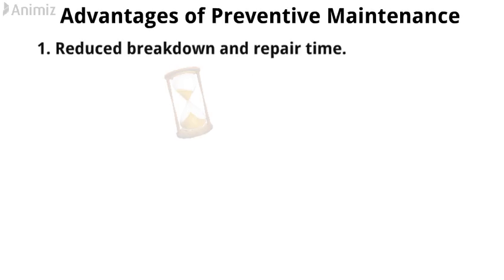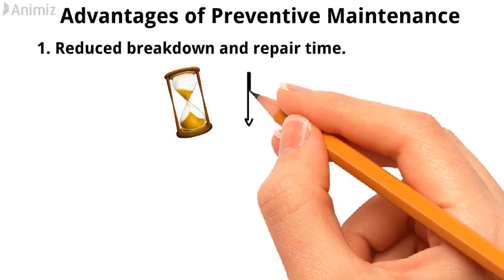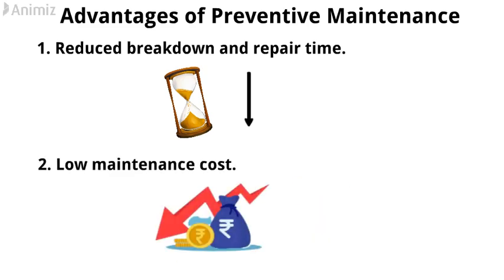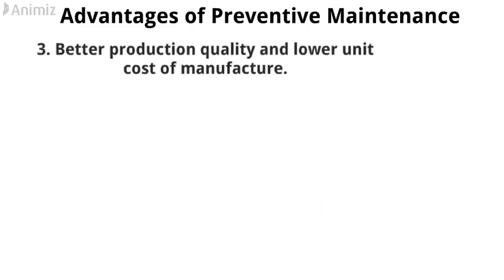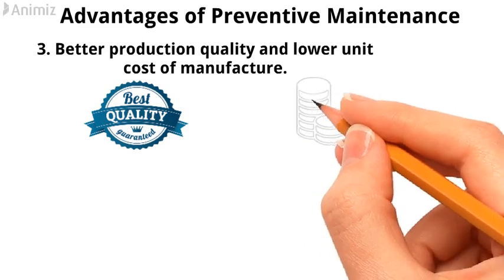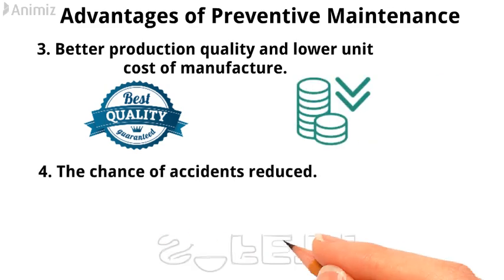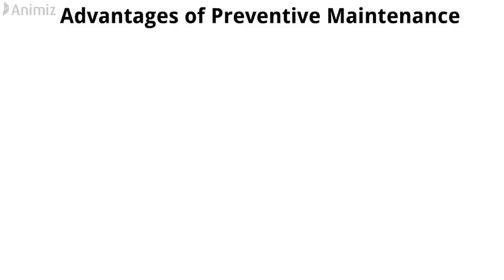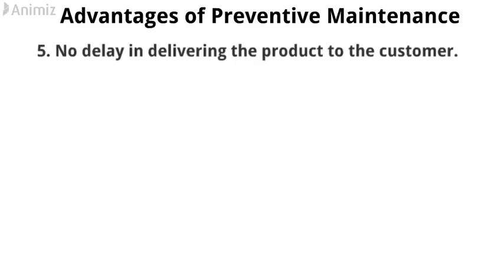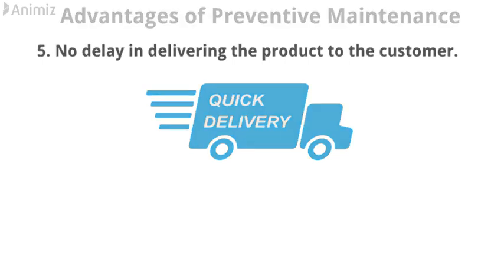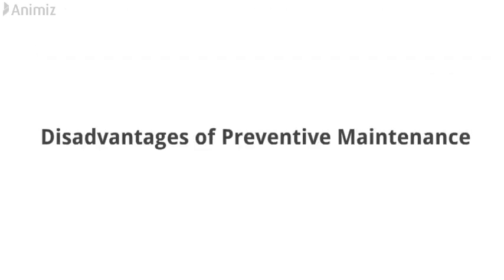Advantages of preventive maintenance: one, reduced breakdown and repair time; two, low maintenance cost; three, better production quality, safety, and lower unit cost of manufacture; four, reduced chance of accidents; five, no delay in delivering the product to the customer.